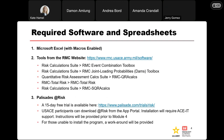For this course, you're going to need a couple of programs and you'll also need to download some spreadsheet tools from the RMC website. First and foremost, everybody is going to need a working copy of Microsoft Excel and the ability to enable macros. There are several tools that will come from the RMC website: the event combination toolbox, joint loading probabilities, and SQRA calcs — all under the risk calculation suite — while QRA calcs and Total Risk will have their own pages on the RMC software page.